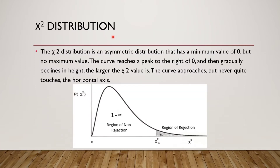The chi-square distribution is a non-symmetric distribution with a minimum value of zero but no maximum value. The curve reaches a peak to the right of zero and then gradually declines. The larger the chi-square value, the more the curve approaches but never quite touches the horizontal axis. The region of 1 minus alpha is the region of non-rejection; if our chi-square value falls in the rejection region, we reject the null hypothesis and accept the alternative.